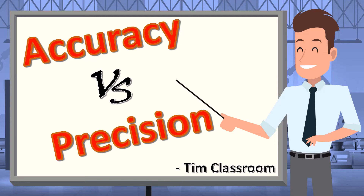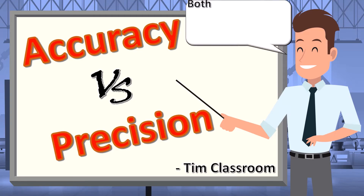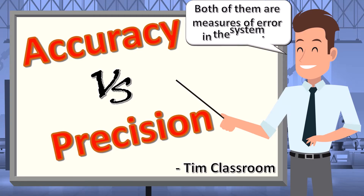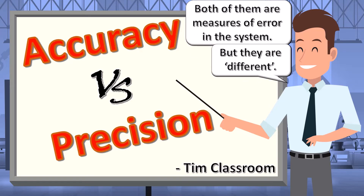Before diving into statistical process control, let us understand a few vital concepts, one of them being the difference between accuracy and precision. Both are used to measure error in the system, but they have different meanings, which we must understand in order to build a strong base for process control.